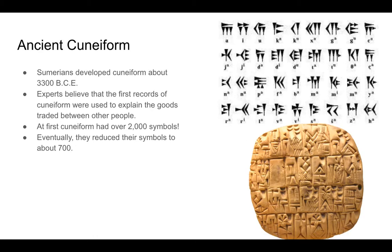Eventually this developed into ancient cuneiform. Experts believe that the Sumerians developed cuneiform about 3300 BCE — remember, BCE stands for 'Before Current Era.' Experts believe the first records of cuneiform were used to explain goods traded between people, almost like receipts we would use today, or records of who bought what.